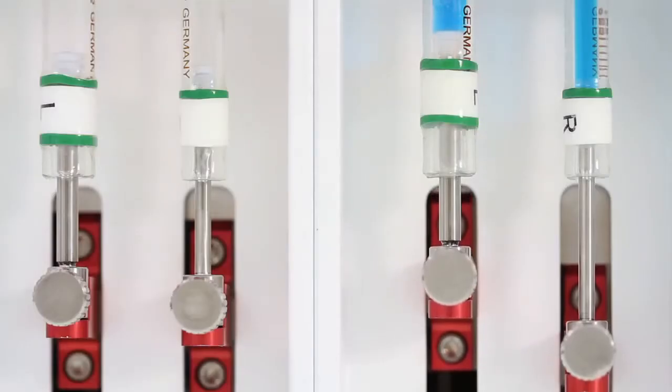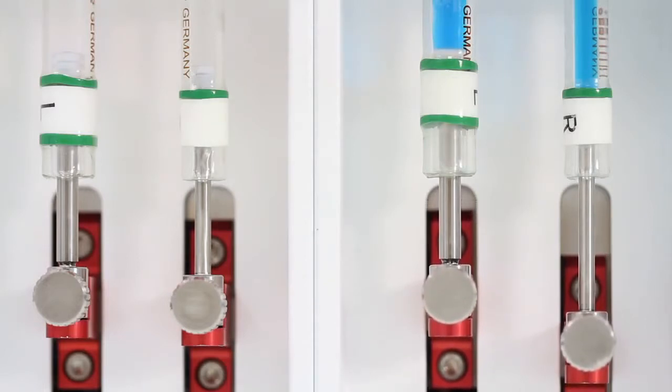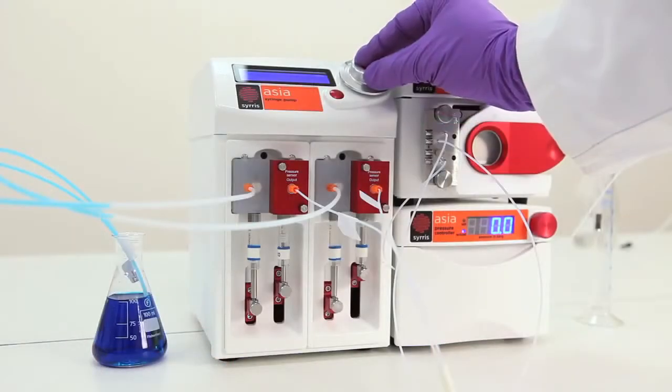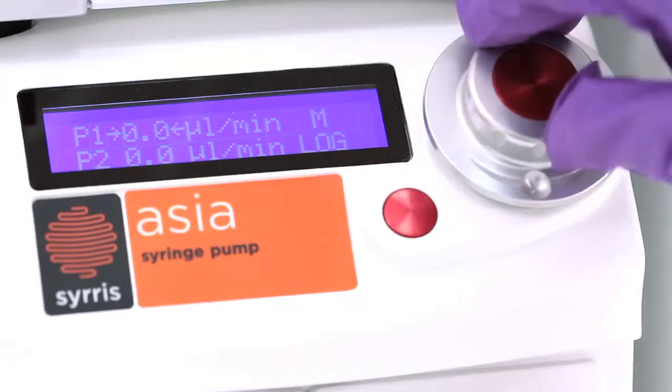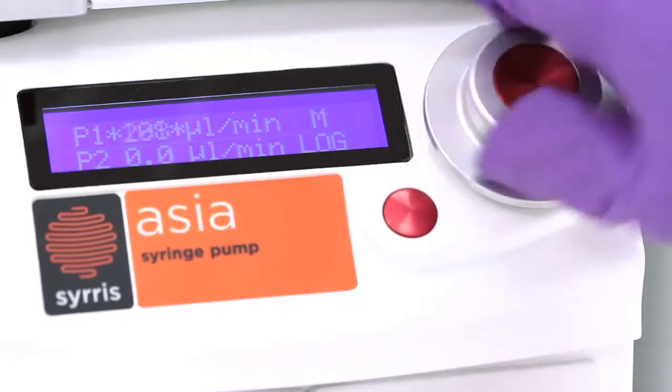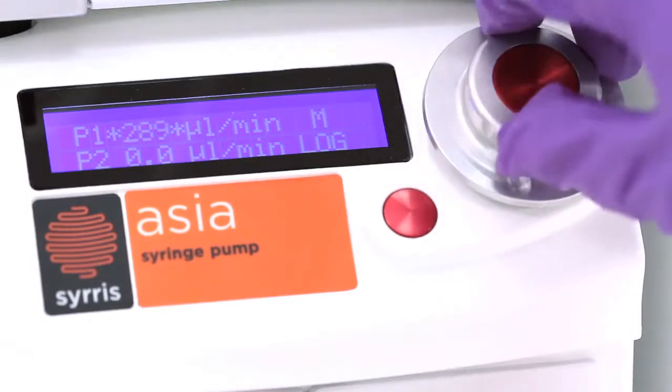This compact module features two independent flow channels, each with an integrated pressure sensor. It enables pressures up to 20 bar and a wide flow rate range from 1 microliter to 10 milliliters per minute.